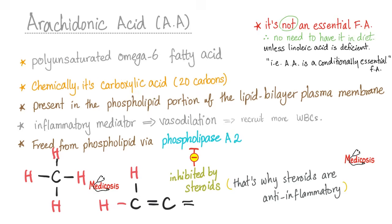But what if we have more than one double bond? Then it's going to be a poly-unsaturated fatty acid. Why call it omega-6? The Greek letter alpha is the beginning and omega is the end. So if you count from the end of the fatty acid — 1, 2, 3, 4, 5 — the sixth carbon has a double bond. This is an omega-6 fatty acid.